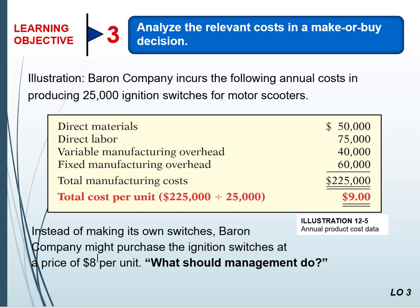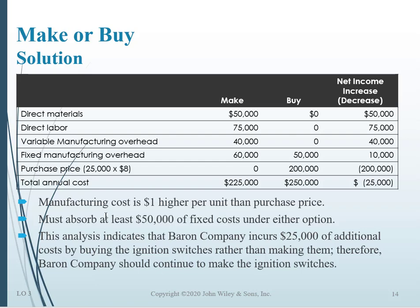Should we make or buy? The purchase price for ignition switches would cost us $8 per unit. Right now our costs to make them are: $50,000 in direct materials, $75,000 in direct labor, variable overhead $40,000, and fixed overhead $60,000 — that's $9 per unit. So on the face of it, it seems like maybe we shouldn't make them, because the cost of making them is $9 but we could buy them at $8.